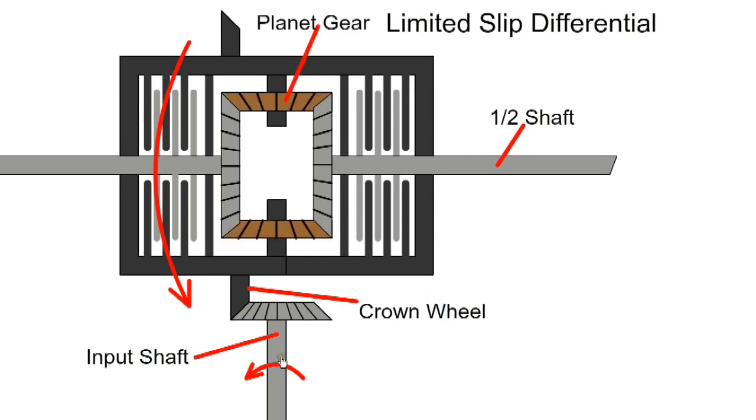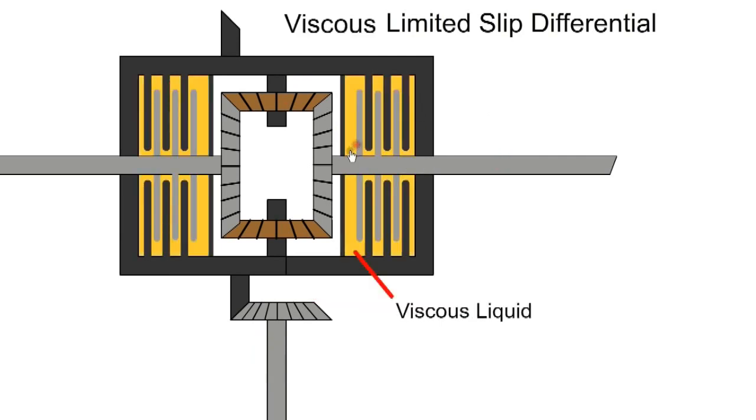With a viscous type LSD, the input pinion drives the crown gear and cage. The cage rotates and drives the sun gears with the planet gears. The cage has a set of plates fixed to it, and the half shaft has another set of plates. The sealed chamber around the plates is filled with a thick viscous liquid.